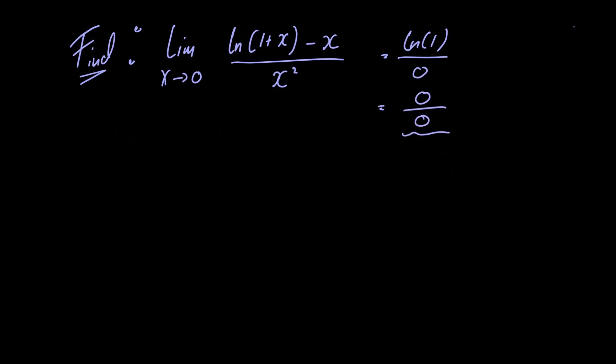So in order to evaluate a limit of this form we need to use something called L'Hôpital's rule. L'Hôpital's rule basically says that if you have a limit as x approaches some value c of a function f of x divided by another function g of x and when we evaluate f and g at c the limit is of